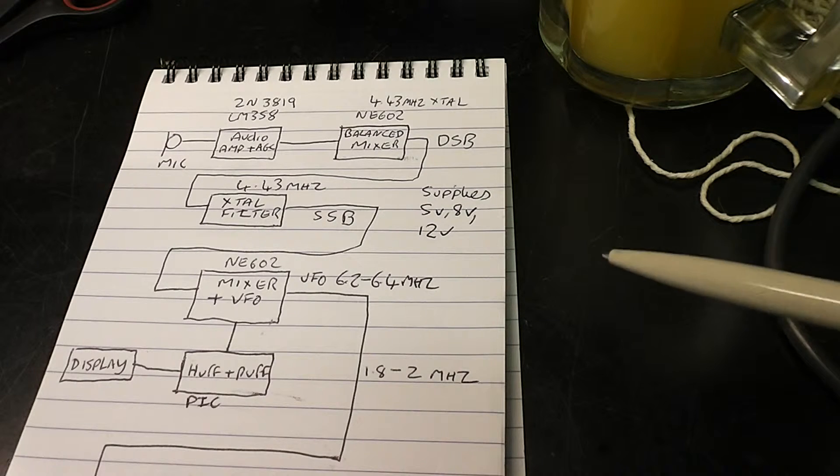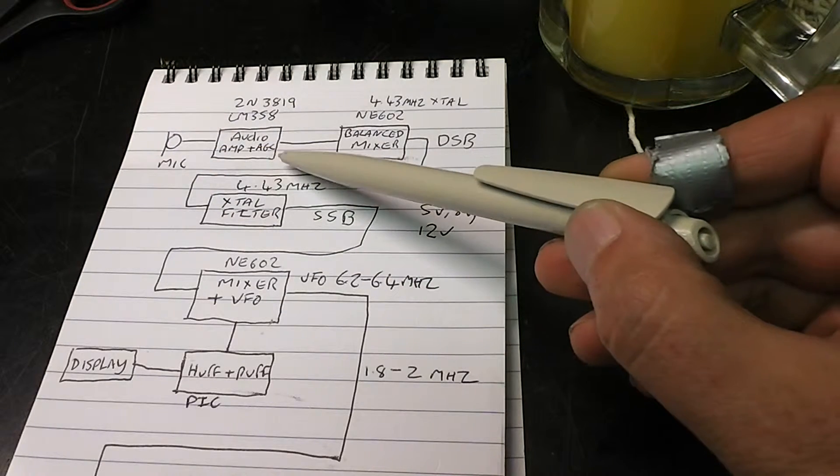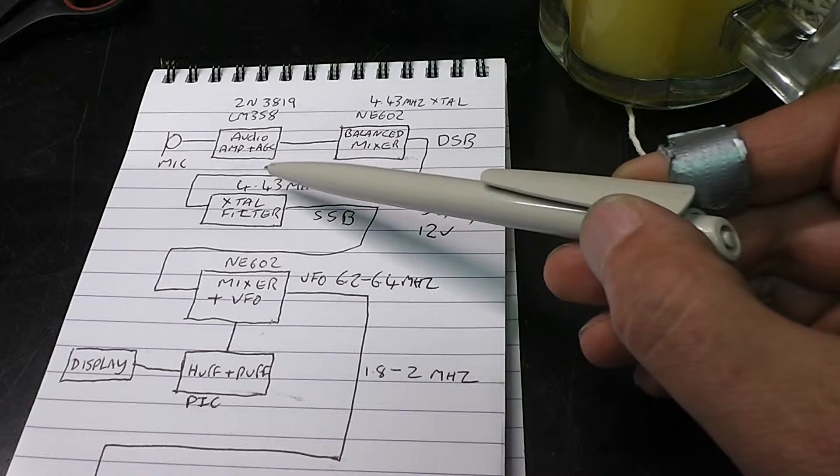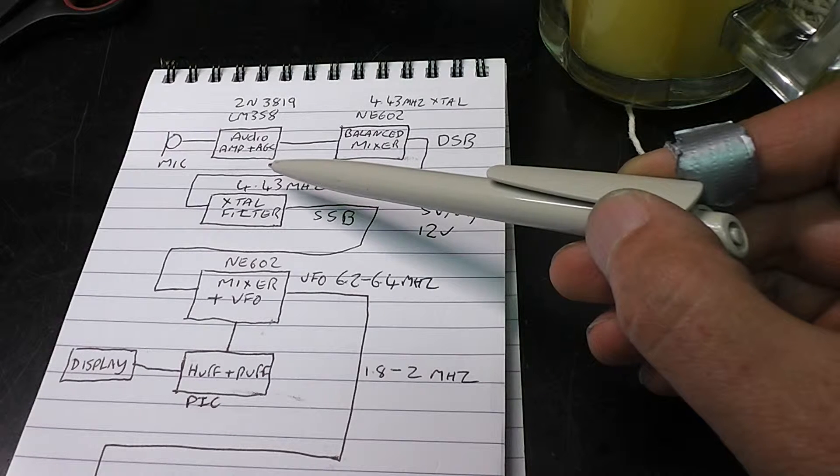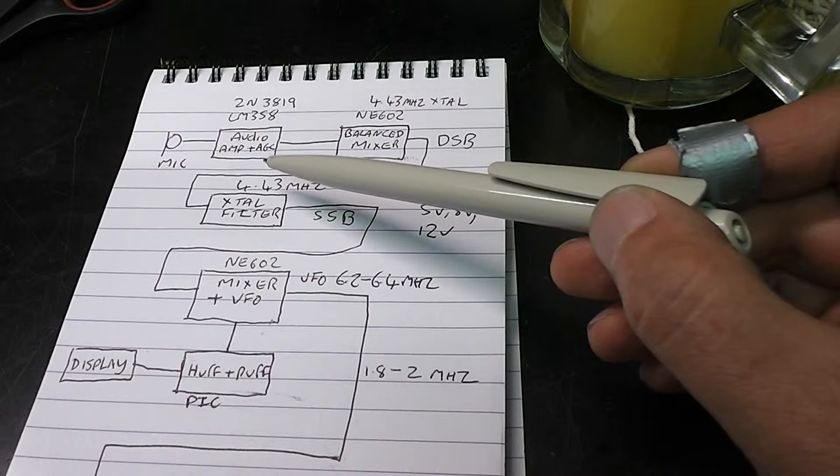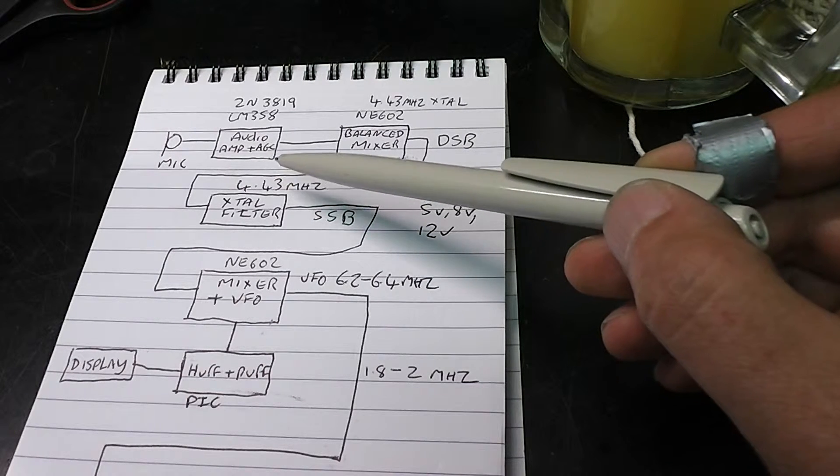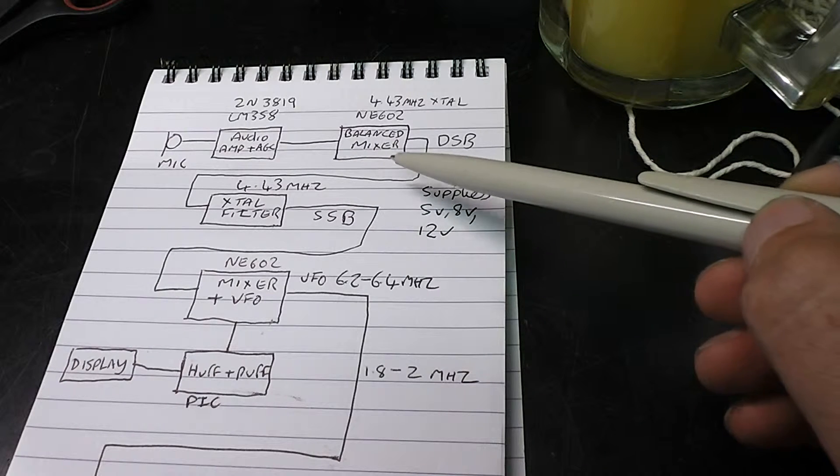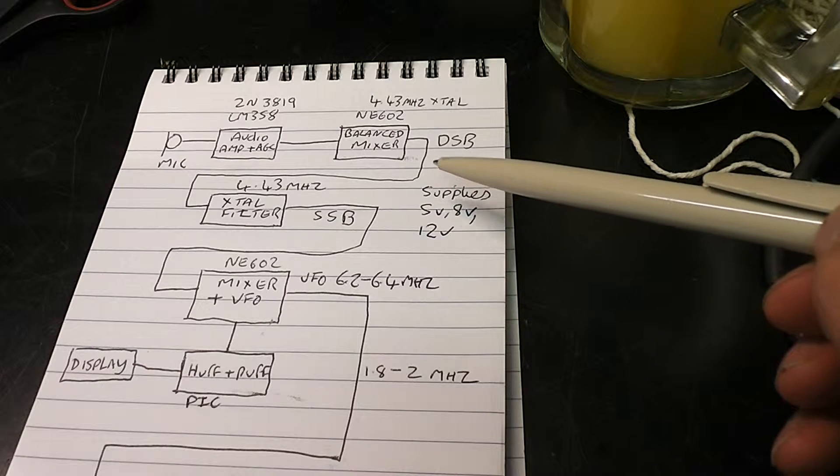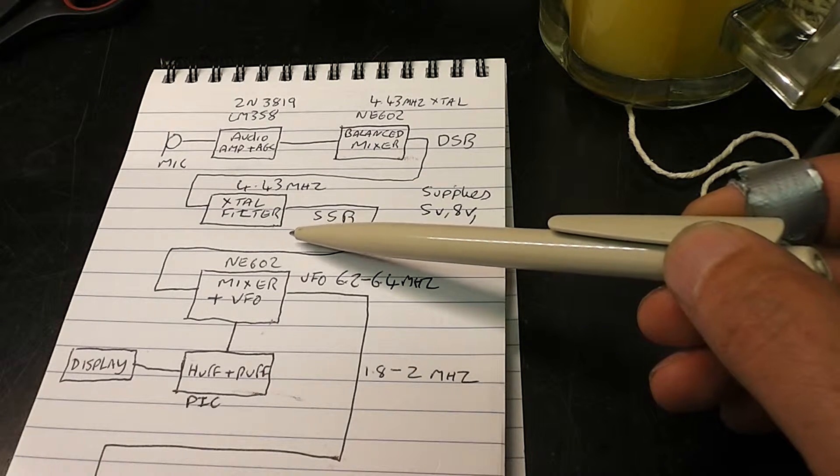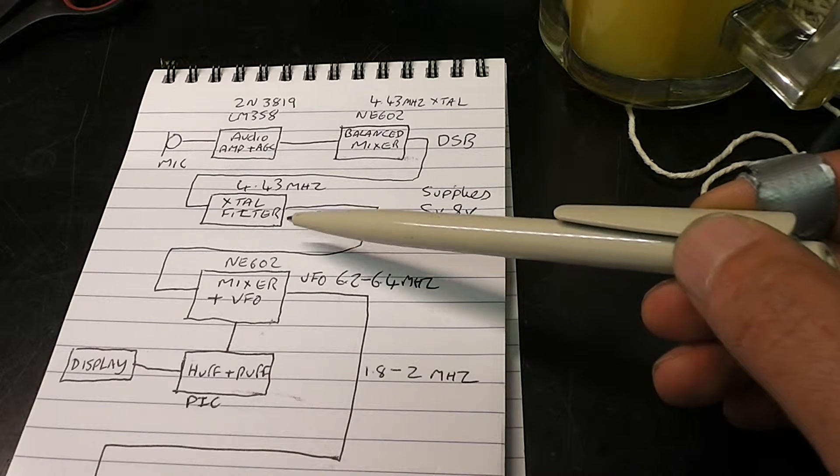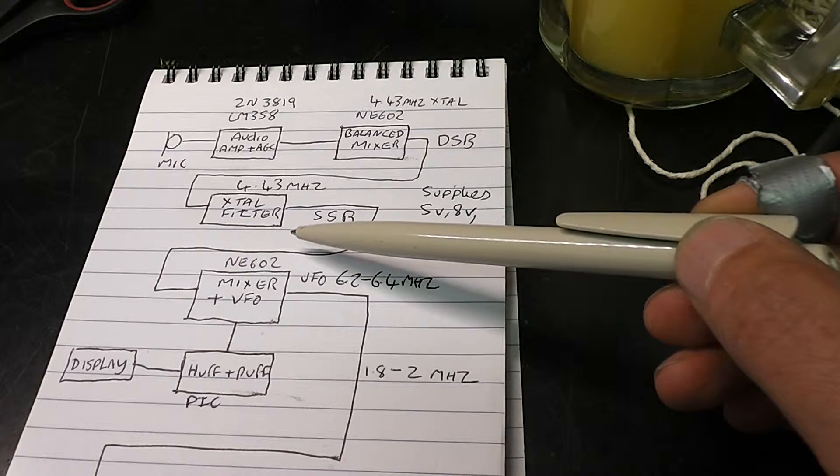In front of you now is the block diagram of this transmitter. We start with the microphone, then an audio amplifier and automatic gain control, which is very helpful for SSB transmission to keep the average audio level high. The output from the audio amplifier is fed into a balanced mixer, an NE602, which produces a double sideband signal so the carrier is suppressed. This is then fed into a homebrew crystal filter which works with 4.43 MHz crystals, which were very popular because it was the carrier frequency for color on PAL television.